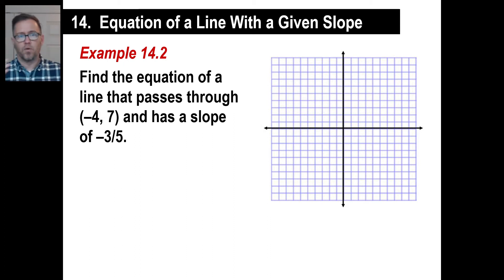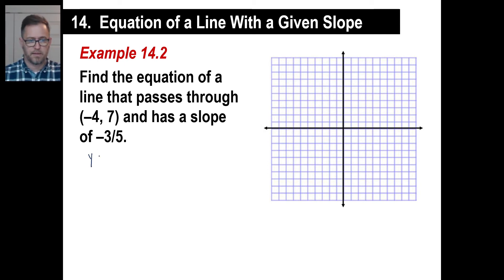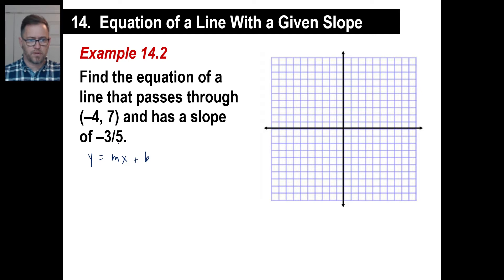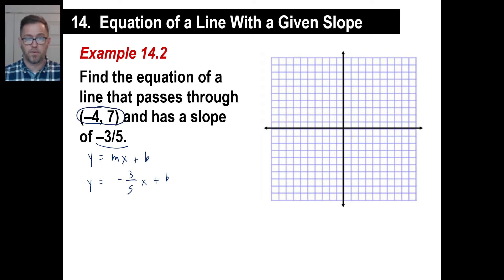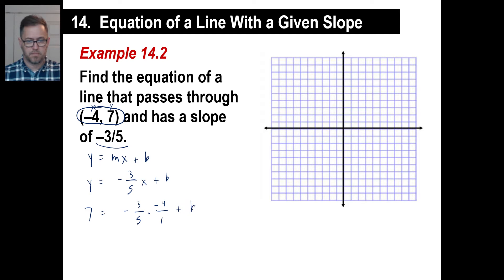Let's do another one — and good grief, this is even easier. Find the equation of a line. Don't think about it — just write y equals mx plus b. You need your m and your b. It passes through negative four, seven, and it has a slope of negative three fifths. It gives us the slope! So we can write: y equals negative three fifths x plus b. Now we need to find b.